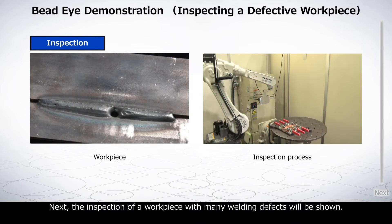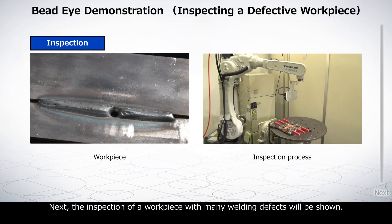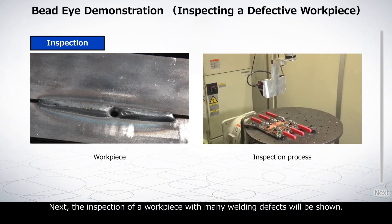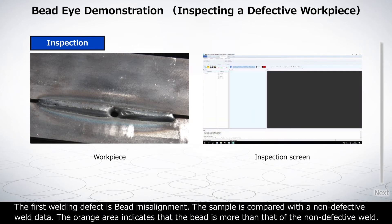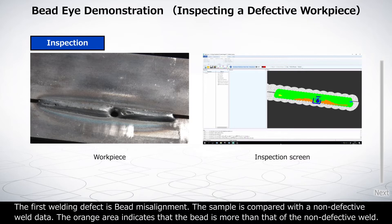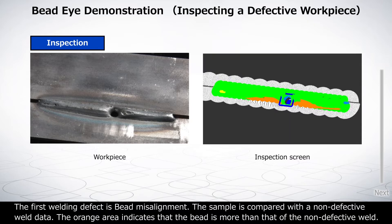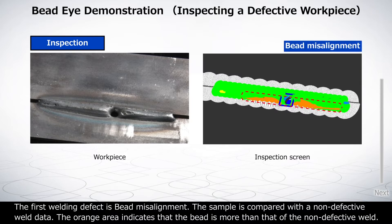Next, the inspection of a workpiece with many welding defects will be shown. The first welding defect is bead misalignment. The sample is compared with non-defective weld data. The orange area indicates that the bead is more than that of the non-defective weld.